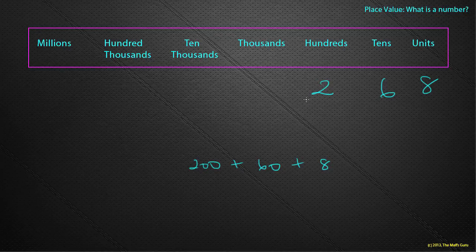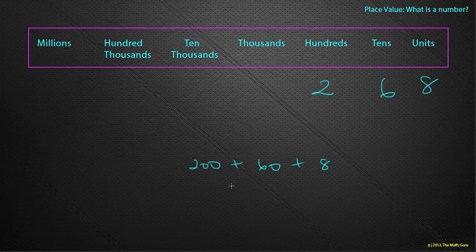Remember the two stands for two hundred. The six stands for sixty, and the eight stands for eight. So in expanded notation, I would have two hundred plus sixty plus eight.